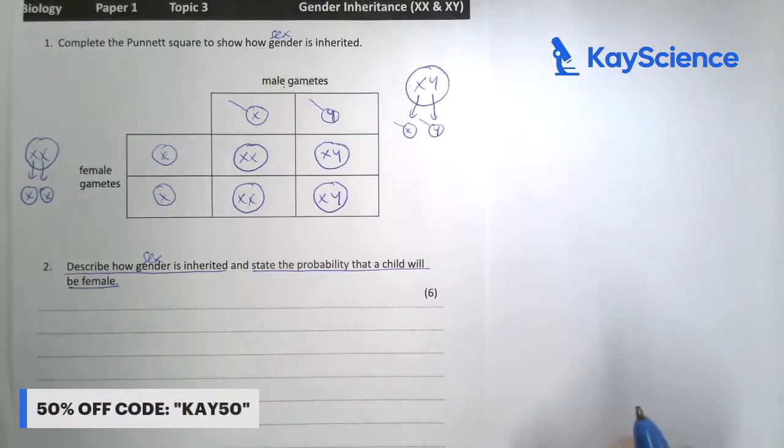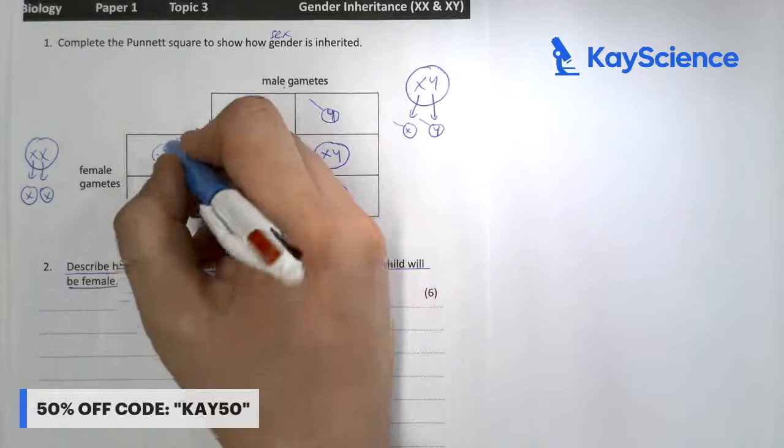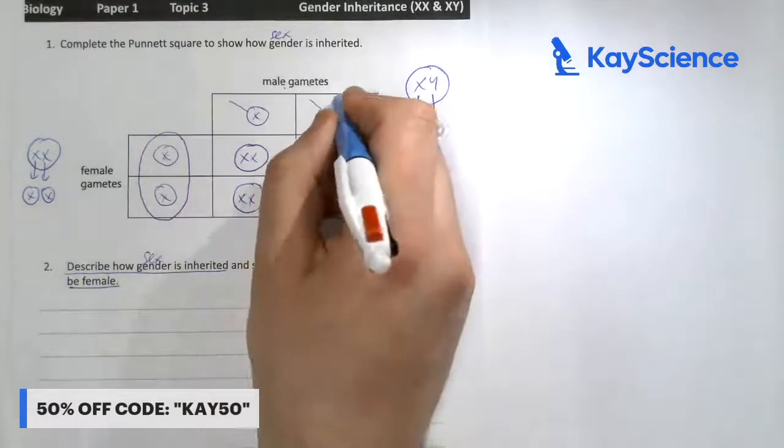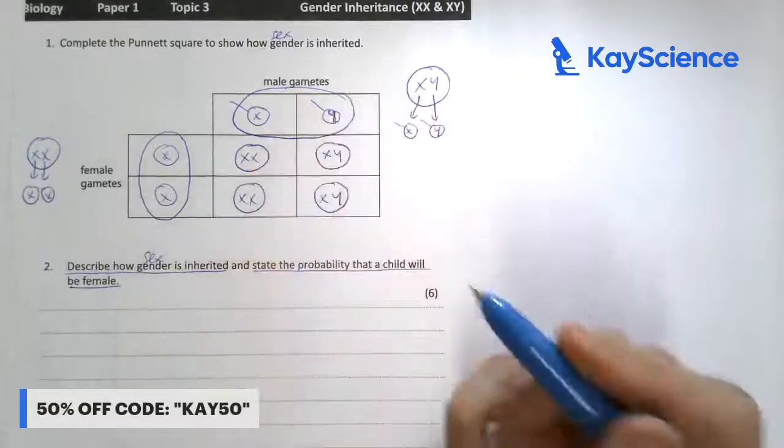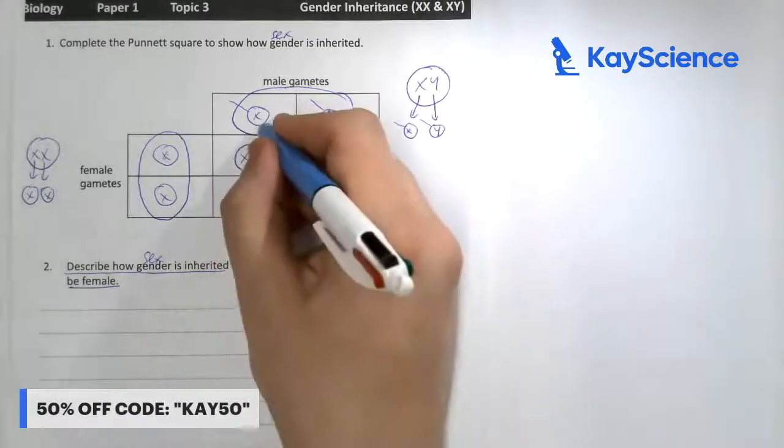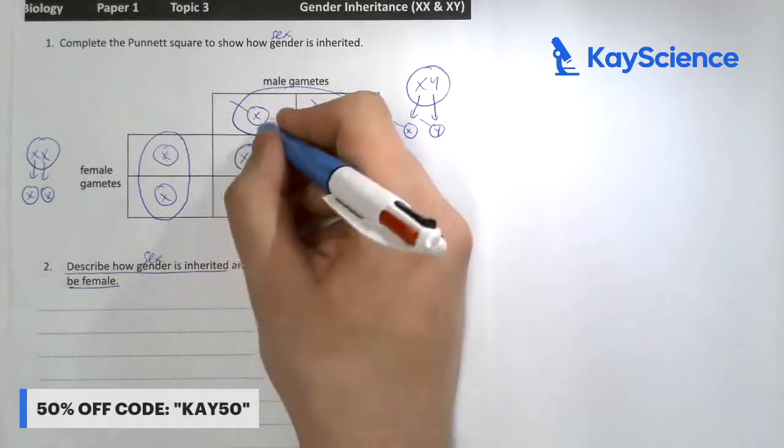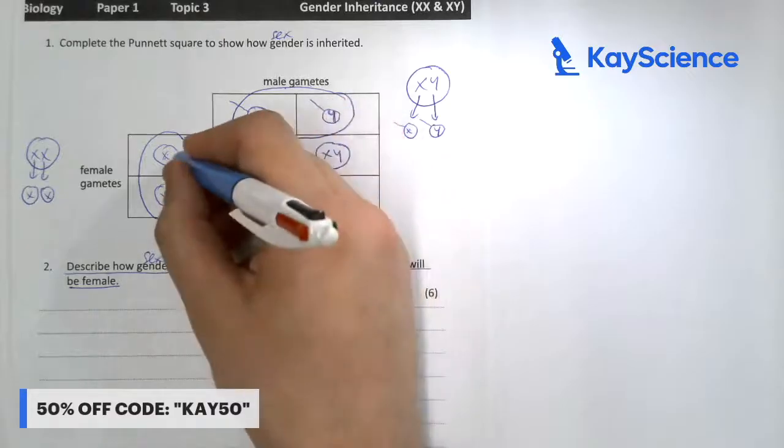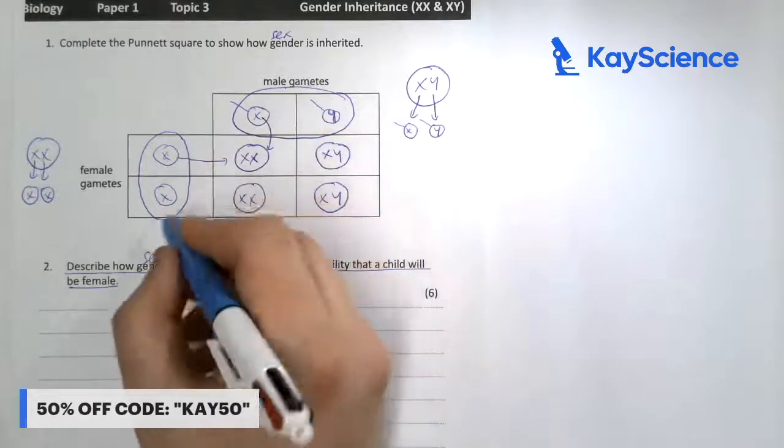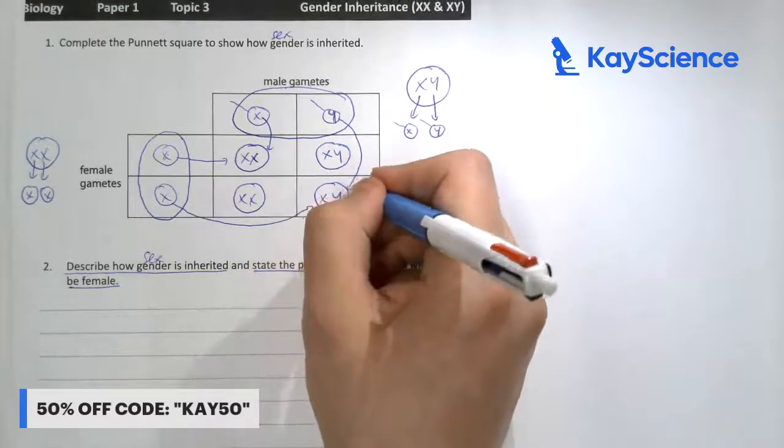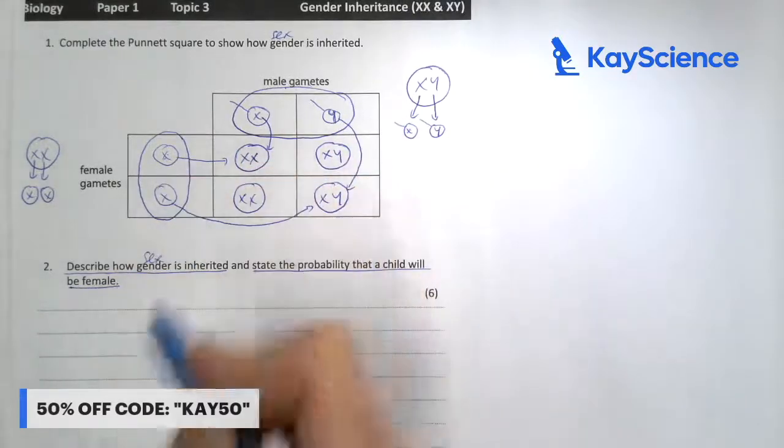So how do you answer this question? Remember, circle the potential gametes, and then let's talk about how a female zygote with two Xs is going to be formed, and then how a male zygote is going to be formed. Follow the arrows.